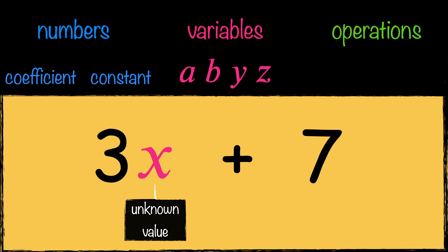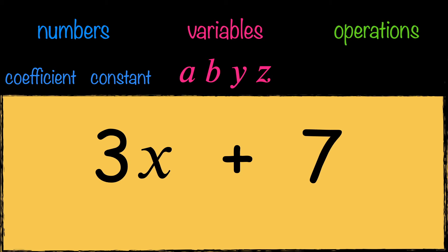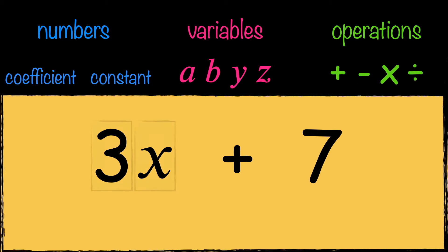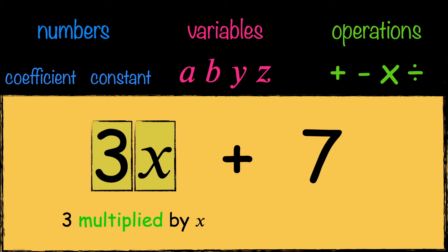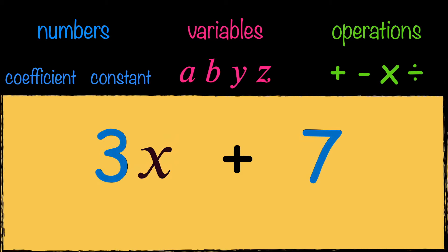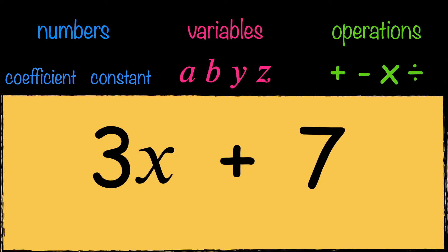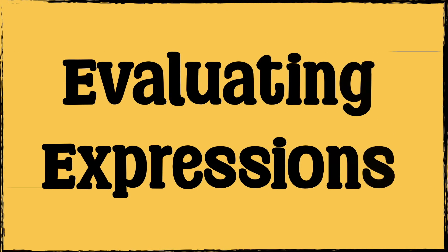Now let's have a look at the operations. Operations are the mathematical actions like adding, subtracting, multiplying, or dividing. In algebra, when a number and a letter are placed next to each other without any sign, it implies multiplication. So 3x means three multiplied by X. This expression also has addition, which is indicated by the plus symbol.